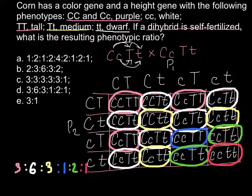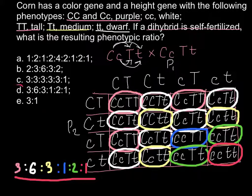So this is our ratio: 3 purple tall, 6 purple medium, 3 purple small, 1 white tall, 2 white medium, 1 white small — giving us 3:6:3:1:2:1. And we have that answer here — that is answer D: 3, 6, 3, 1, 2, 1. So the answer is D.